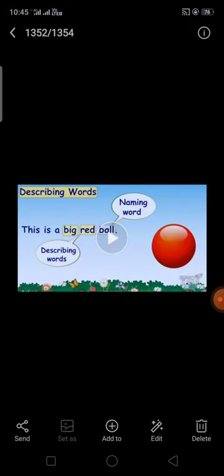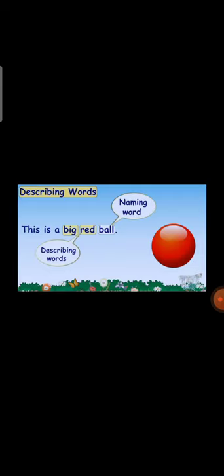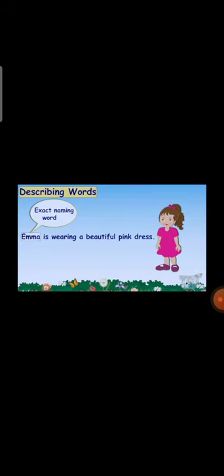Next one — look at the picture. This is a big red ball. Identify the nouns in this sentence. Ball is the naming word. Big and red are both describing words — their other name is adjective. So big and red are adjectives. Emma is wearing a beautiful pink dress. Emma and dress are the nouns. Emma is a proper noun, dress is a common noun. Beautiful and pink are describing words.